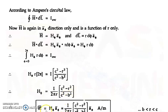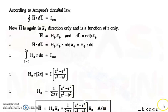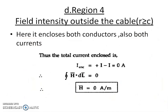The final equation for H in Region 3 is H = [I / (2πr)] × [(c² − r²)/(c² − b²)] × a_phi amperes per meter. This is the value of H in the annular outer conductor region.